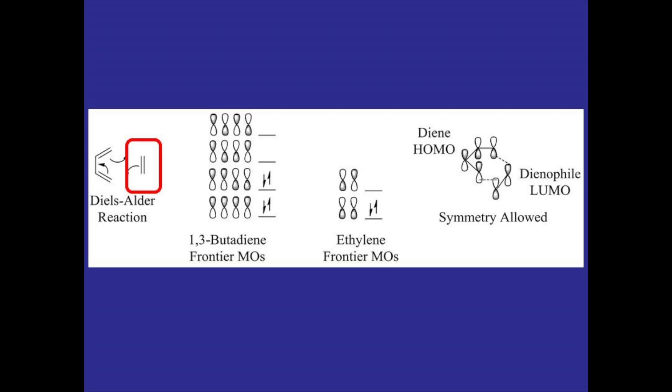Now if we take a look at the frontier molecular orbitals for the diene, we don't see a classic pi and pi star configuration like we see for the dienophile. Since there are four p orbitals that are in conjugation with each other, there are four molecular orbitals that they form.